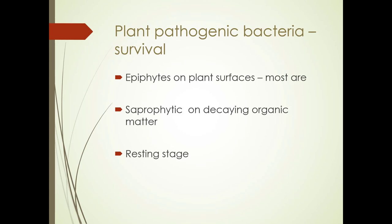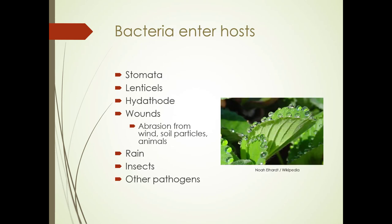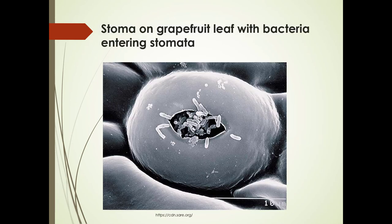There's also a resting stage. Bacteria can enter the host through stomata, lenticels, and hydathodes — those pore-like structures at the end of leaves, as shown in the picture here, where guttation is happening. They also enter through wounds from abrasion by wind, soil particles, pruning, animals, rain, insects, and other pathogens. Here's a closeup on a grapefruit leaf stoma with bacteria entering — you can see they're very tiny.